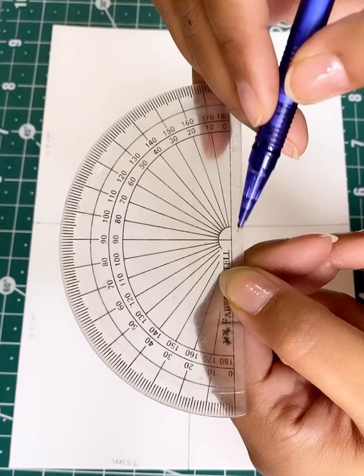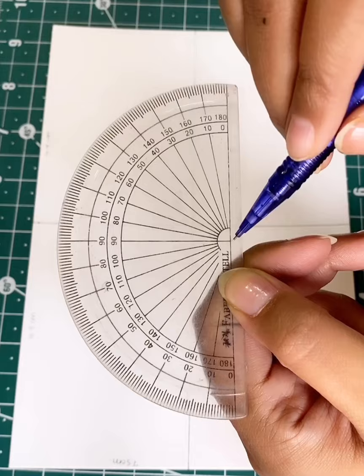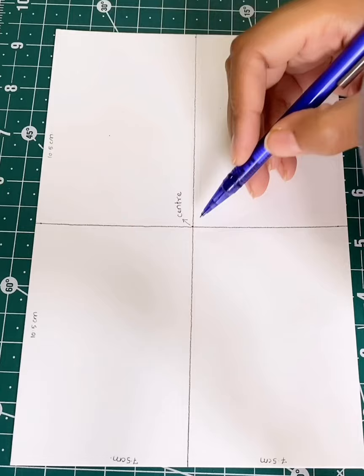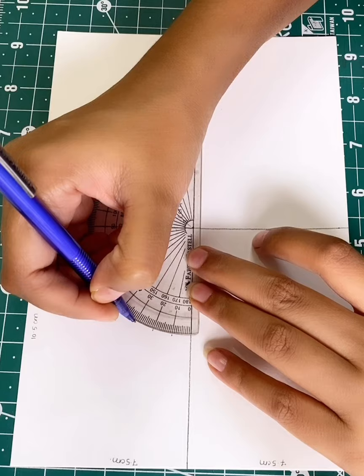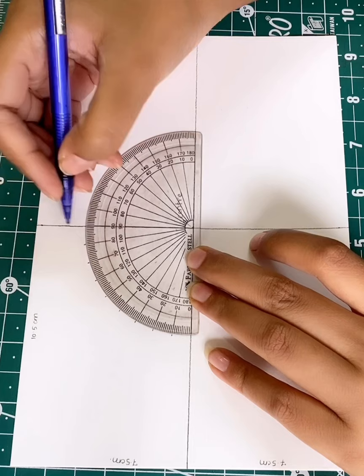Now we need to create sections for our mandala. I'll place the protractor in such a way that its center and base lines align well with the center and base lines of the page. I'll start marking points at 10 degrees each. This will help create 36 equal sections.